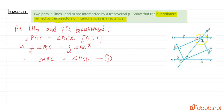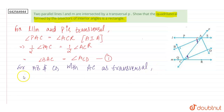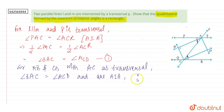For lines AB and CD, with AC as transversal, angle BAC is equal to angle ACD, and these are alternate interior angles of lines AB and CD. So we can conclude that AB is parallel to DC, because their alternate interior angles are equal. So we have proved that line AB is parallel to line DC.